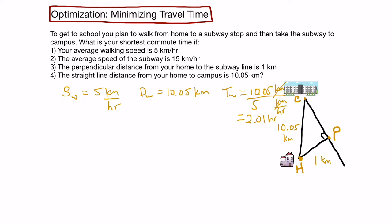Another option at the other extreme is to walk from home to the subway line and then take the subway all the way into campus. The total time in that situation would be the time it takes to walk to the subway plus the time it takes to ride the subway into campus. Our walking speed is still 5 km per hour, but the distance we have to walk is only 1 km. So our time walking would be 1 divided by 5, which is 0.2 hours.